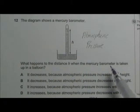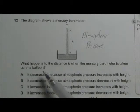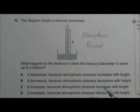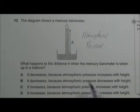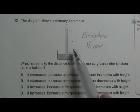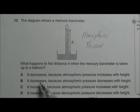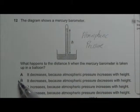So when the barometer is being taken up in a balloon, it will move up higher and higher. And the atmospheric pressure will decrease with height because the air at a higher height will be less dense. So it will bring about a lower atmospheric pressure. And when the atmospheric pressure decreases, the height that is being recorded will decrease as well. So the answer should be B.